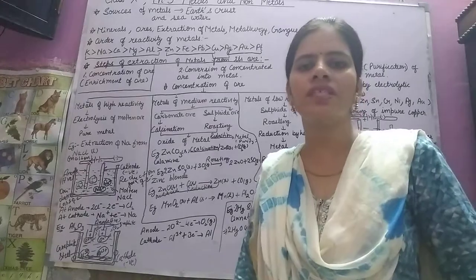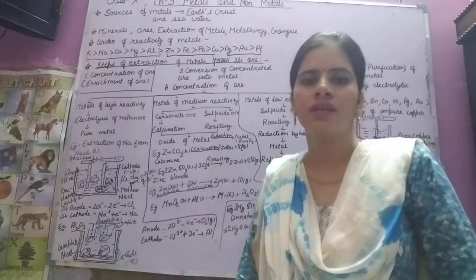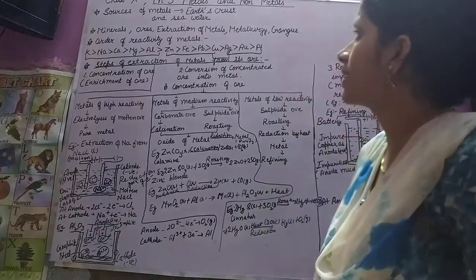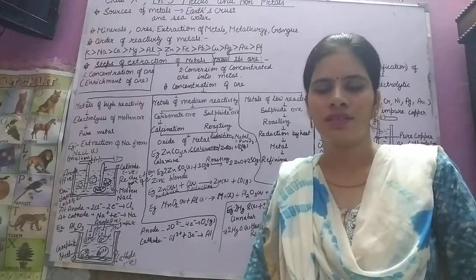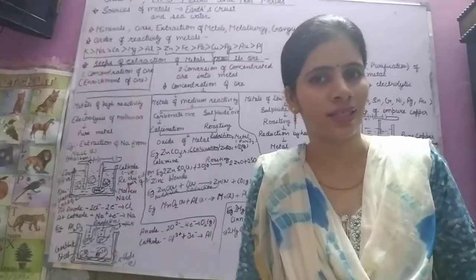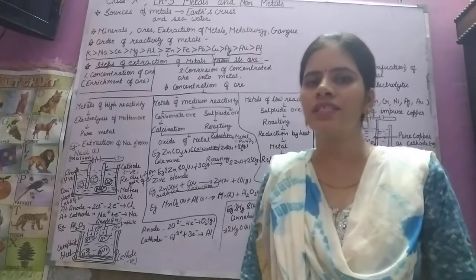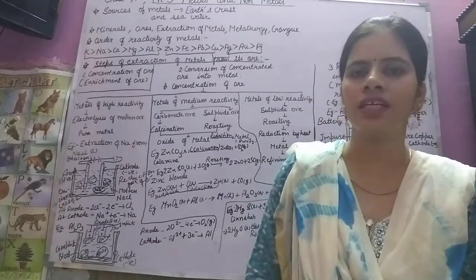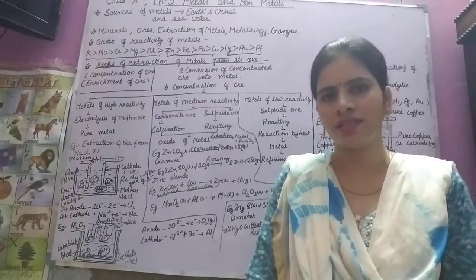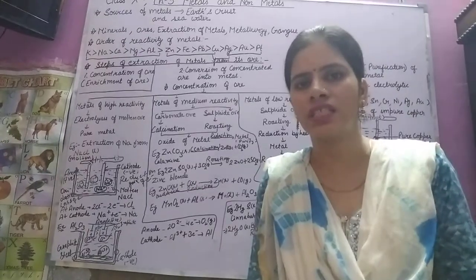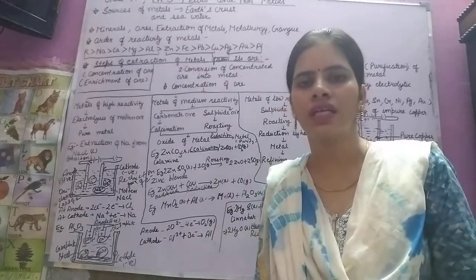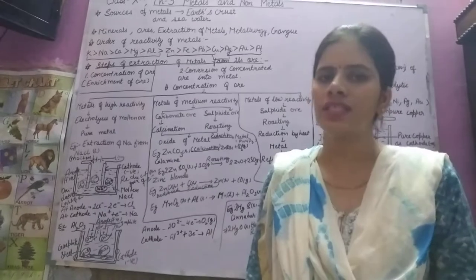Hello students. In the previous class you studied about ionic compounds and covalent compounds. Today I will teach you about minerals. Minerals are naturally occurring compounds that are mixed with earthy materials. Examples include quartz, mica, feldspar — all of these are minerals.